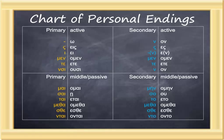Secondary endings, which are used on augmented stems — imperfect, aorist, for instance. The secondary active endings are: nu, sigma, nothing, men, te, nu.